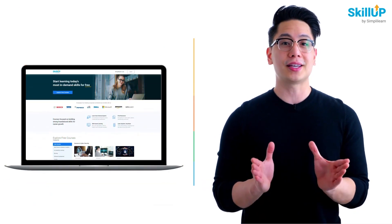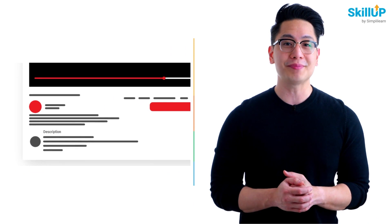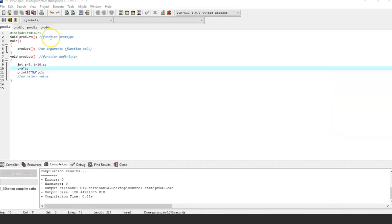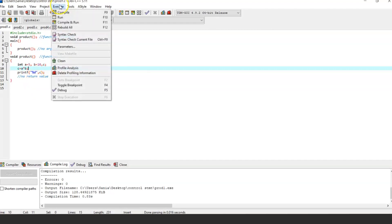So this program is function with no argument and no return value. As you can see, we have declared function prototype, function call, and function definition, in which we have function with no argument and no return value, and we will perform multiplication operation using user defined function. Now let's run the program.